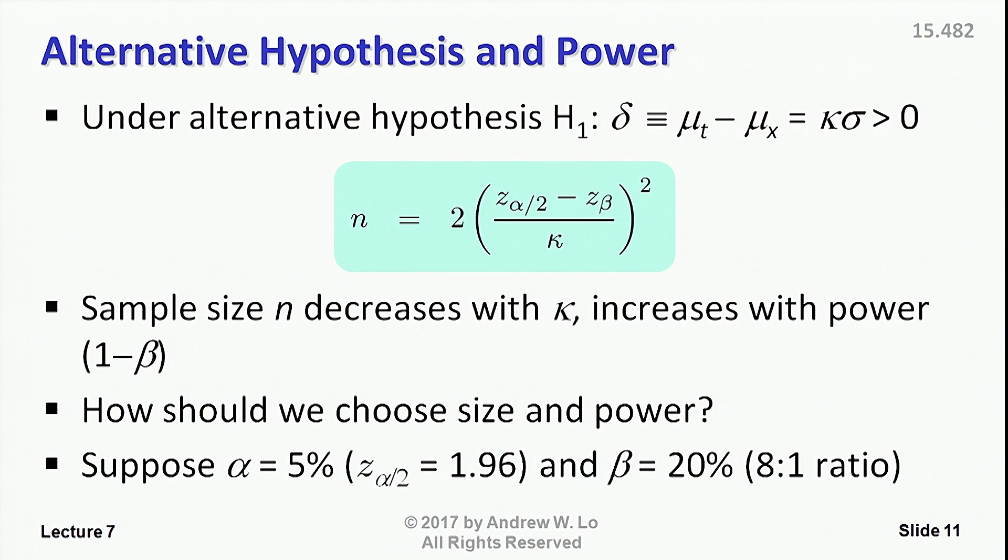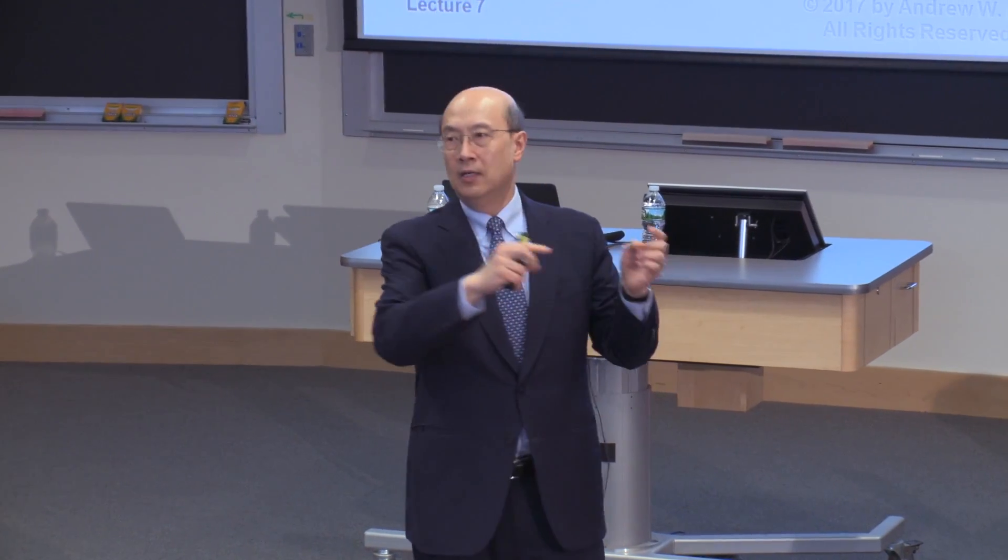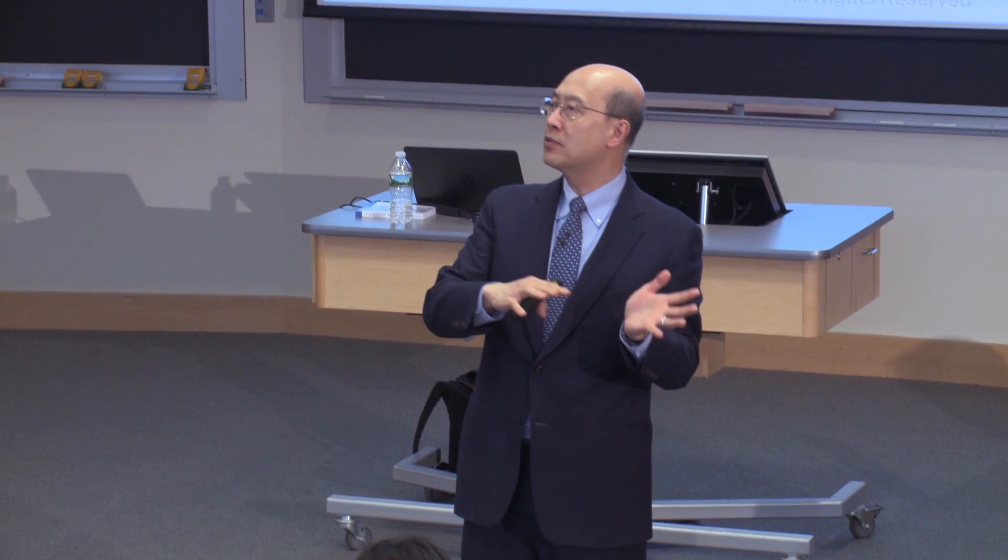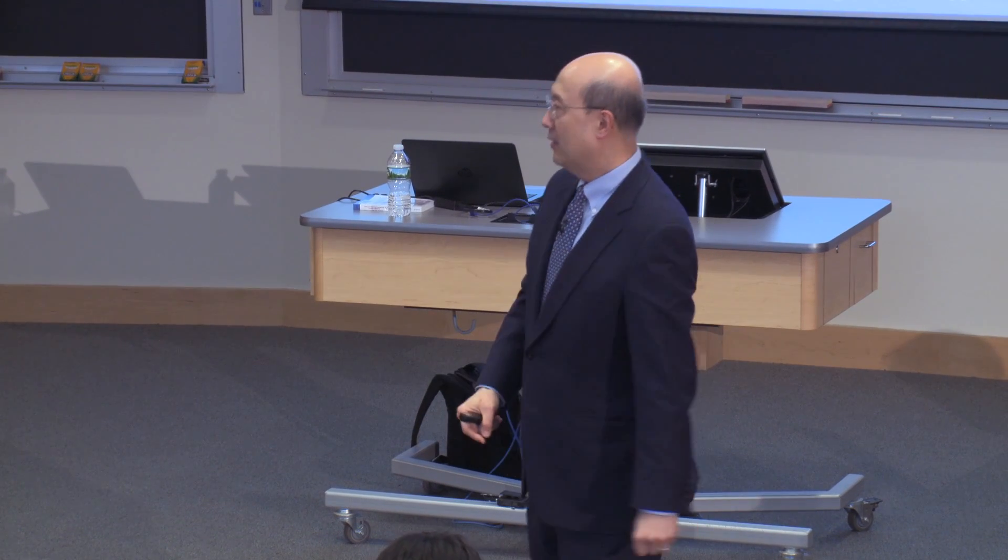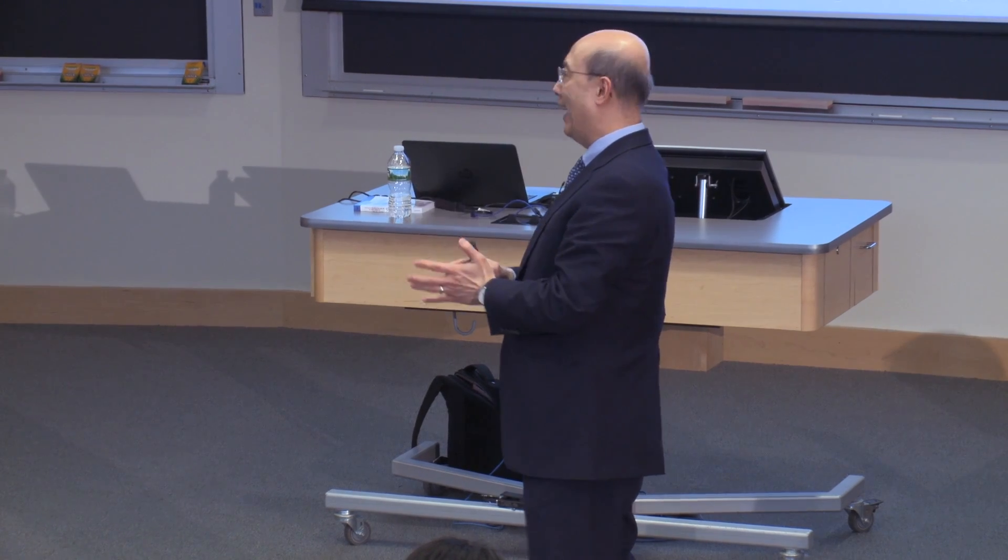The larger the kappa, the smaller the sample size you need in order to guarantee a certain type 1 or type 2 error or a certain power. Power is the probability of rejecting the null, assuming that the null is false. So you can think of it as the probability that you're likely to get the drug approved assuming that it actually is an effective drug.